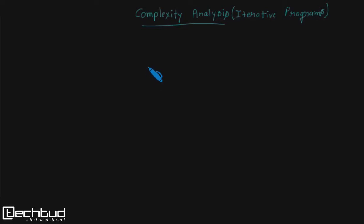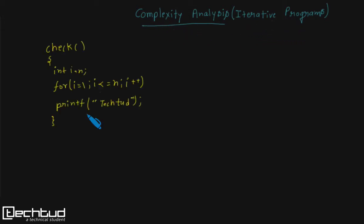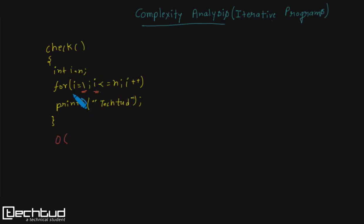Hello friends, welcome to TechTooth. In this video we will discuss how we can calculate complexities of some iterative programs. Here I have taken a simple program which includes only one for loop, and inside the for loop we are only printing a statement. You can analyze that this for loop will execute a total of n number of times, so the complexity of this simple program will be O(n).